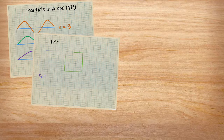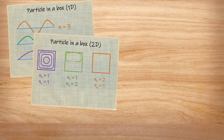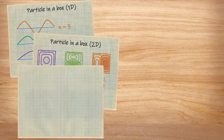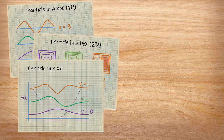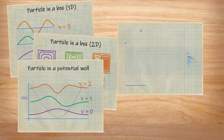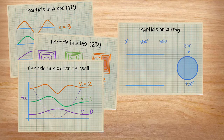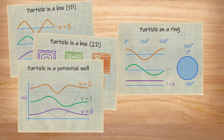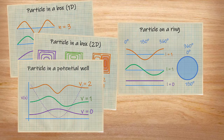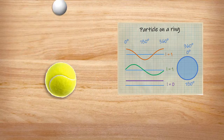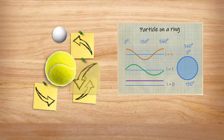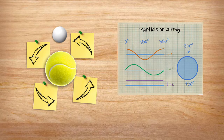We can expand this model by adding new dimensions to show a 2D or 3D space, add a potential energy well, or fiddle with the constraints. Instead of locking off the box at both ends, we can connect both ends to form a ring. This model is often used to develop quantized angular momentum in electrons, but it can work for any particle that can be said to orbit another — including atoms — so molecular rotations are also quantized.